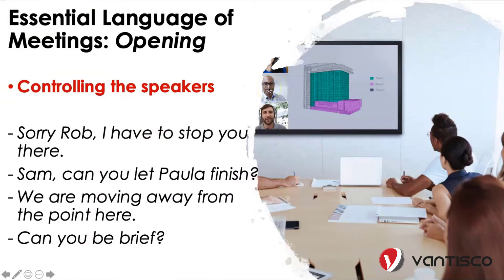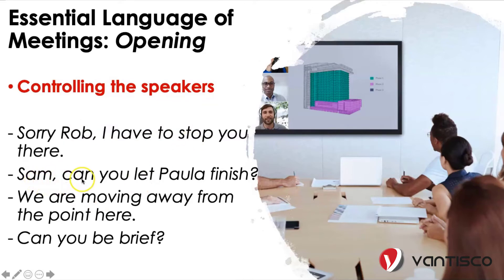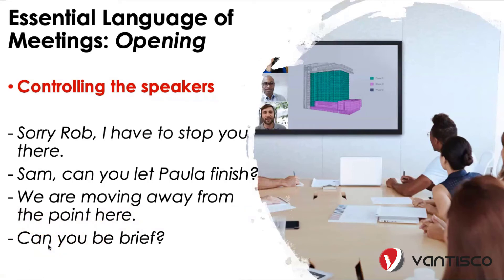Controlling the speakers: أوقات الحاضرين بالاجتماع ممكن يطلعوا خارج إطار الموضوع اللي نحنا عم نحكي فيه. كيف ممكن نعمل control؟ إذا صارت هيدي الحادثة ممكن نقول: 'Sorry Rob, I have to stop you there.' أو إذا صار في مقاطعة: 'Sam, can you let Paula finish?' أو: 'We are moving away from the point here.' وإذا حدا كتير عم يستطرد ممكن نقوله: 'Can you be brief?'